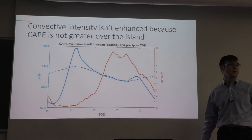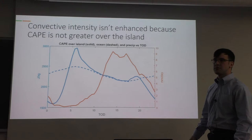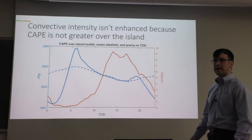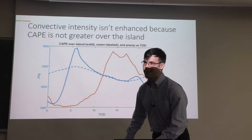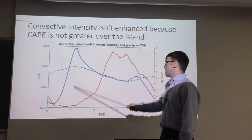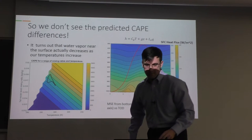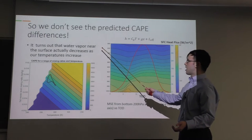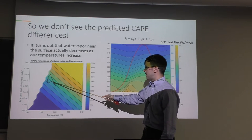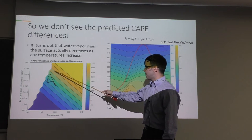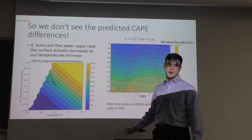A committee member asks about time of day — clarified that the x-axis is relative to the surface temperature sine wave, with surface temperature maximizing at noon. We don't see our predicted CAPE differences. It turns out that water vapor near the surface is actually decreasing as temperature increases. This is shown in a contour plot of water vapor mixing ratio versus surface temperature: for many of the higher surface temperatures, water vapor actually decreases substantially, so CAPEs aren't increasing. Moist static energy contours show that as surface heat flux increases with time of day, the moist static energies are not increasing.